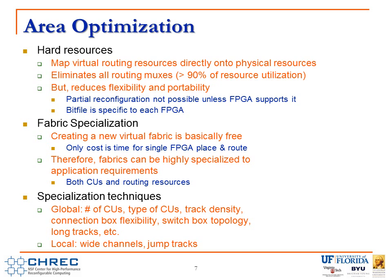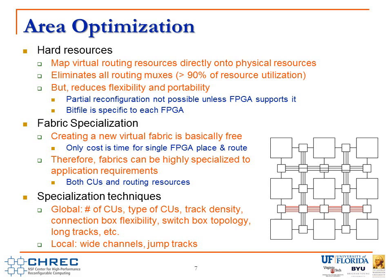There are also a number of local specialization strategies. One is called wide channels — as opposed to varying track density uniformly across an entire fabric, wide channels increase just an individual row or column. The motivation is that you may have a netlist with high routing requirements in only a certain region, so it makes sense not to increase routing resources across the entire fabric. Another approach is what we call jump tracks — a jump track is a long track not confined to a single channel, and for individual applications you can add a jump track for every net in the netlist, giving every single routing connection a one-hop delay.